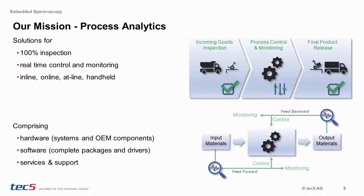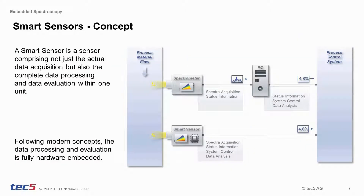The most striking aspect of a smart sensor is it being a device continually providing process information without the need of having a separate PC. Embedded spectrometer systems offer a low-level, real-time implementation of the entire data processing, including chemometric evaluation directly in the measuring instrument. This means that all relevant components — spectrometer, light source, and data processing board — are integrated in one unit.